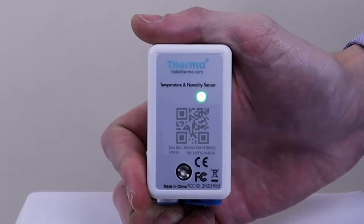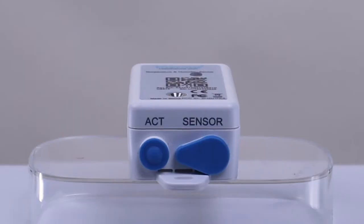The sensor has a status LED on the front and a button on the bottom labeled ACT. The ACT button is how you activate your sensors.